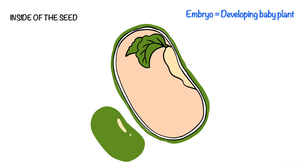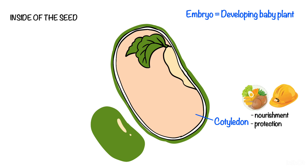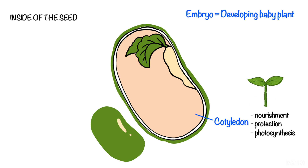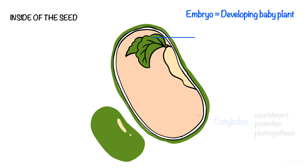Next we look at the parts that actually form the embryo inside the seed, starting with the cotyledons. These provide both nourishment and protection similar to the endosperm. However, in many plants the cotyledons form the first set of leaves and help the growing plant to create food by performing photosynthesis.